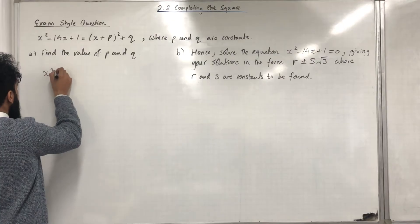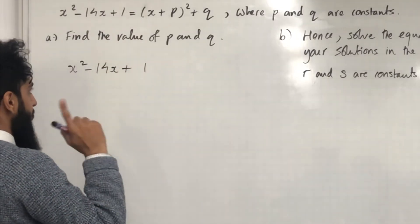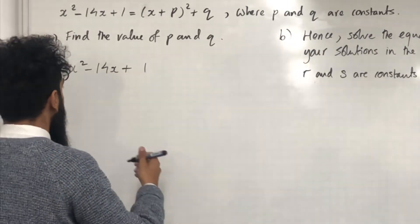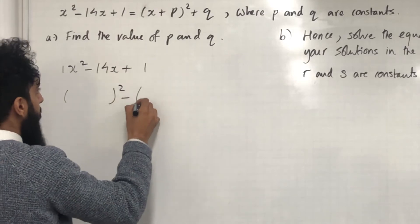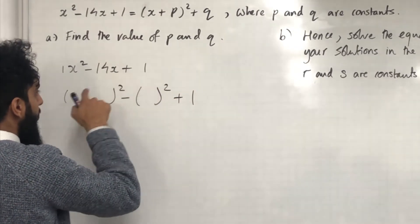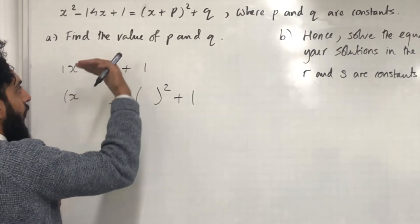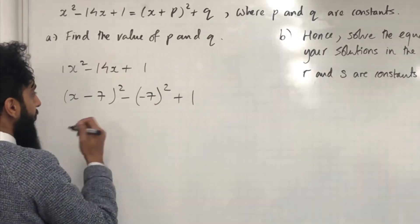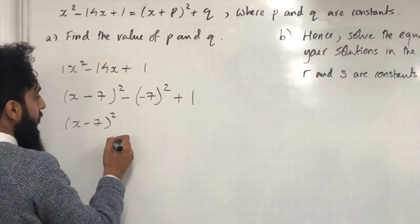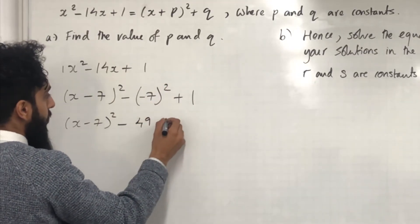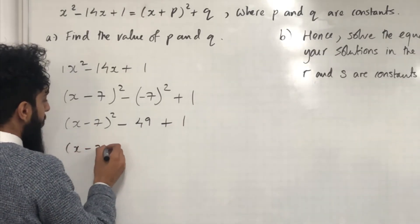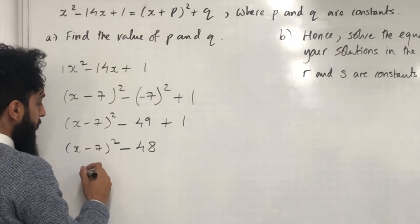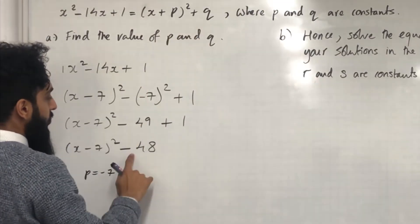Starting with x² − 14x + 1, the coefficient of x squared is 1 so we proceed. We write bracket squared minus bracket squared plus 1, stick in x, look at the coefficient of x which is −14, half it giving −7, and put −7 in both places. Cleaning up: (x − 7)² − 49 + 1, which gives (x − 7)² − 48. Comparing with (x + p)² + q, we get p = −7 and q = −48.